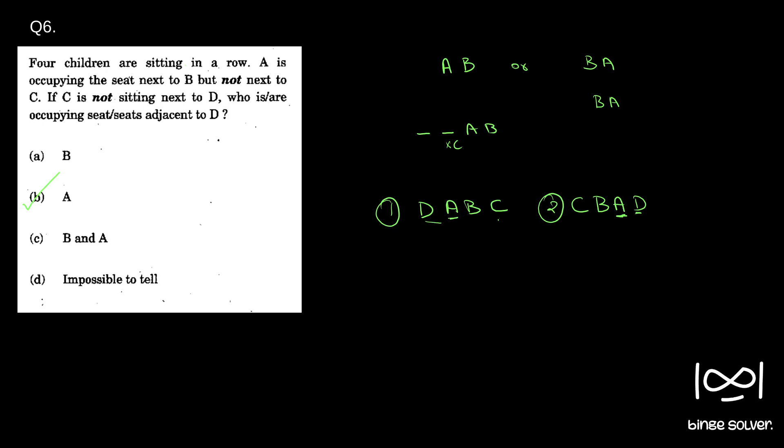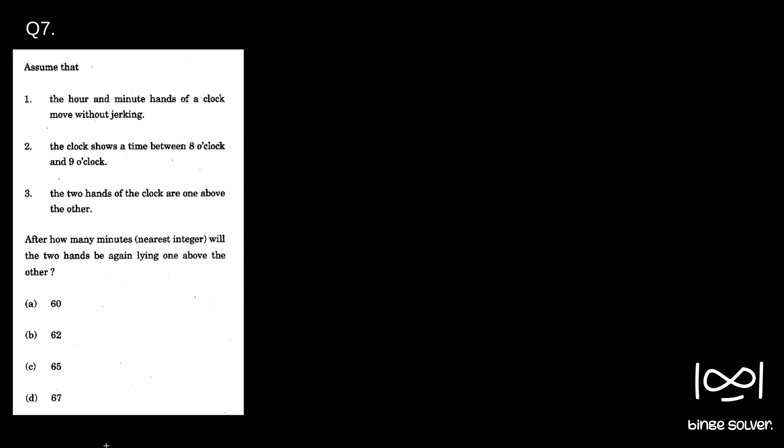Moving on to the next question — Question 7. Assume that the hour and minute hands of a clock move without jerking. The clock shows a time between 8 o'clock and 9 o'clock, and the two hands of the clock are one above the other. After how many minutes, to the nearest integer, will the two hands be again lying one above the other?